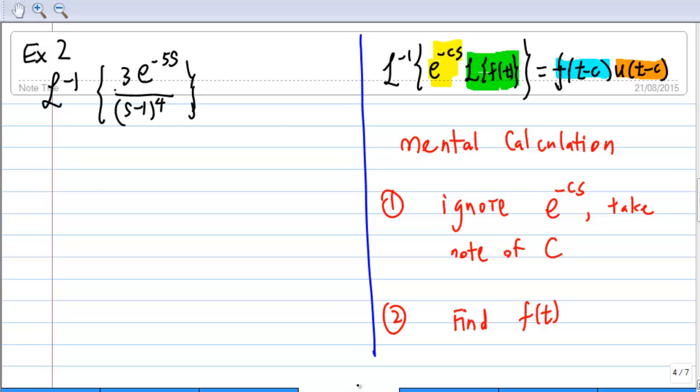Next, I'm going to find f of t. Now because after I ignore e power negative 5s, I have 3 over s minus 1 power 4 and this is my f of t. How do I find the answer? I'm going to first shift s minus 1 to s by applying first shift.